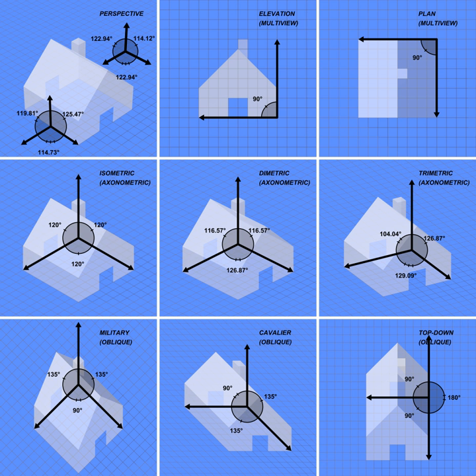An isometric projection shows the object from angles in which the scales along each axis of the object are equal. Isometric projection corresponds to rotation of the object by plus or minus 45 degrees about the vertical axis, followed by rotation of approximately plus or minus 35.264 degrees, equals arcsine tan 30 degrees, about the horizontal axis starting from an orthographic projection view.